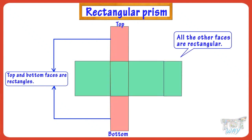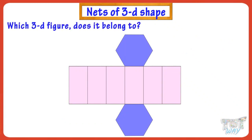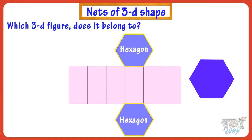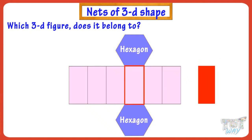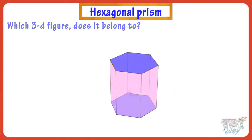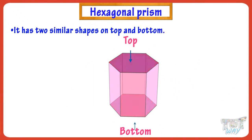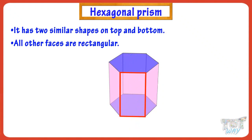Now let's see another 3D shape. Here we have a net, and we have to see which 3D figure it belongs to. Can you figure it out? See it carefully. As we can see, this net has two hexagons and all the other faces are rectangles, so it's a hexagonal prism. As we know, prisms have two similar faces on top and bottom, and all other faces are rectangular.